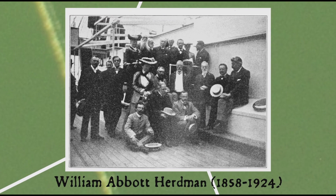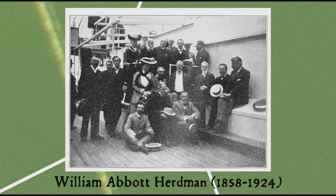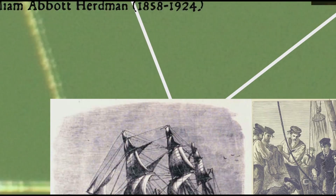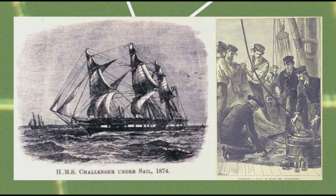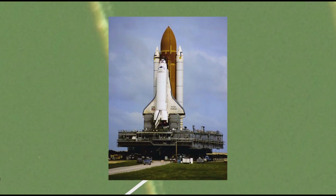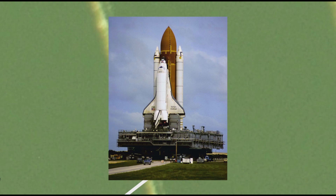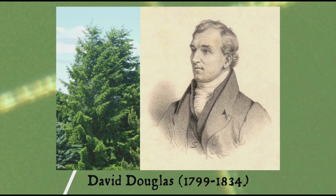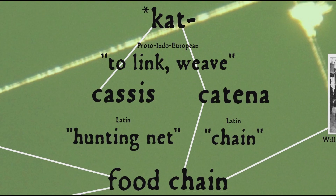As for the term food chain, Elton again had a hand in its popularization, though it was first used in print in 1920 by Scottish marine zoologist and oceanographer William Abbott Herdman, secretary of the Challenger Expedition Commission, which basically kicked off the modern field of oceanography, and eventually lent its name to the Space Shuttle Challenger, and whose father-in-law, botanist David Douglas, lent his name to the Douglas fir. The etymology of the word chain is uncertain, but it seems to come from the Latin word catena, meaning chain, and may be related to Latin cassis, hunting net, and ultimately from a root that means to link or weave — so not too far from a web.